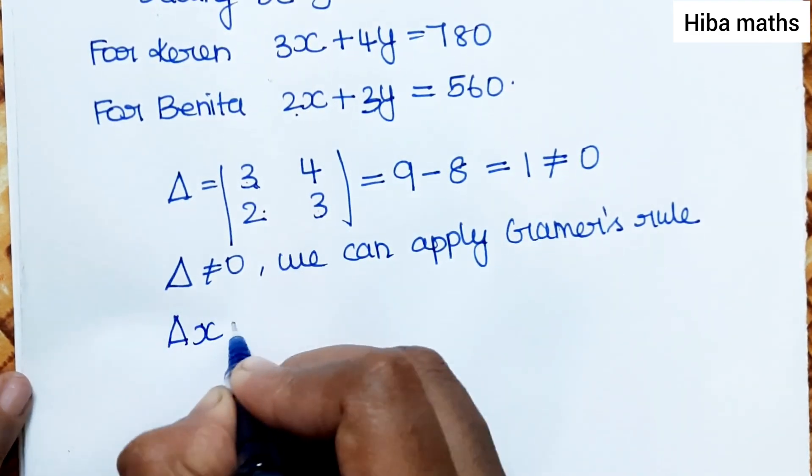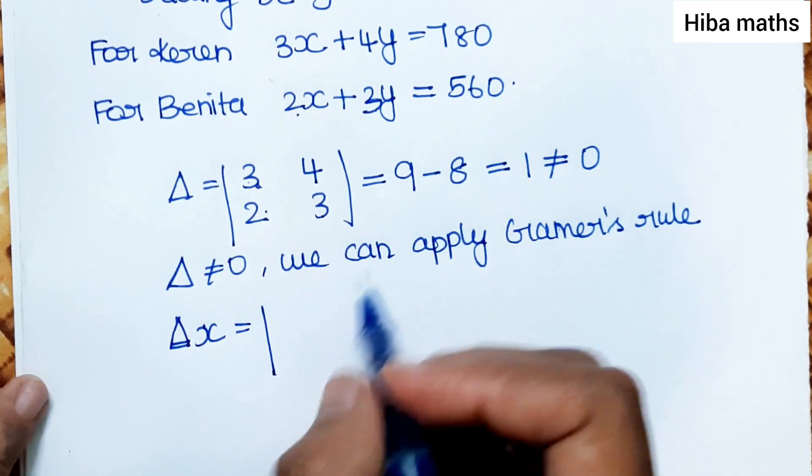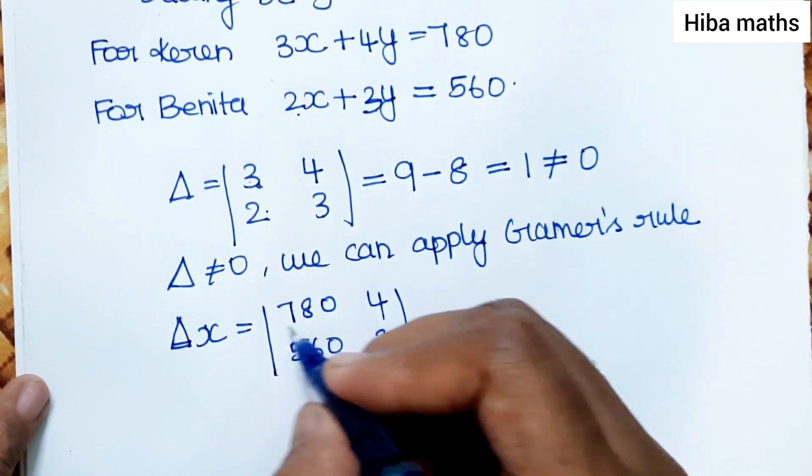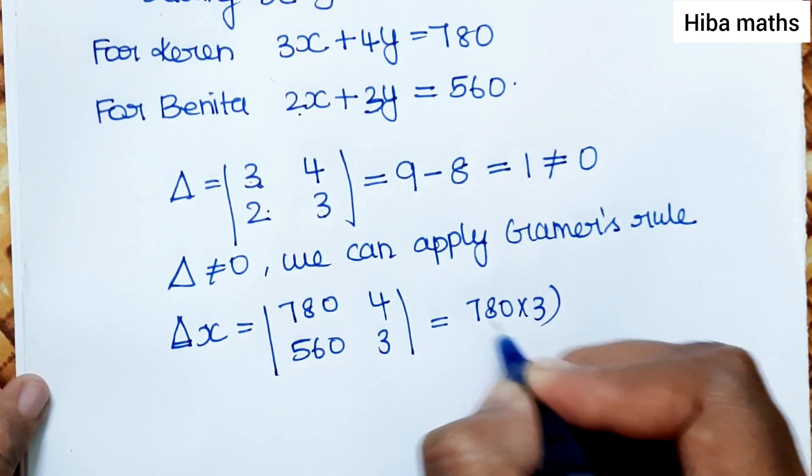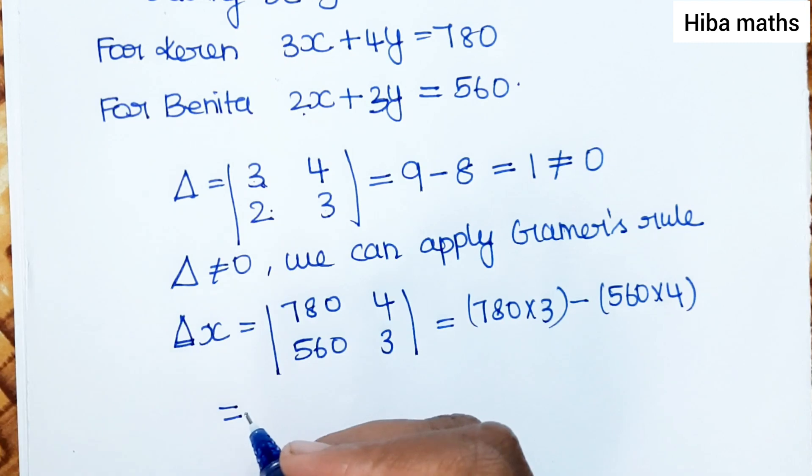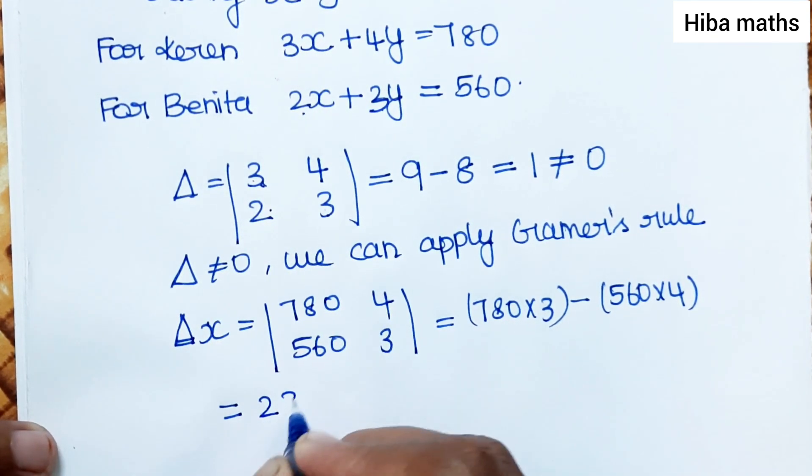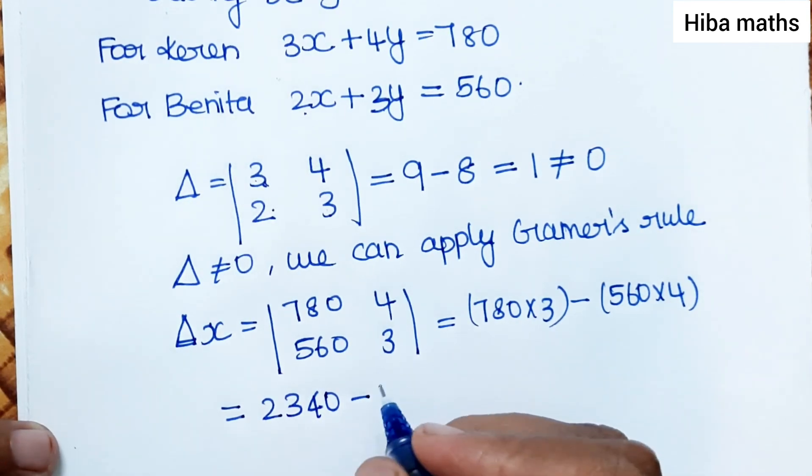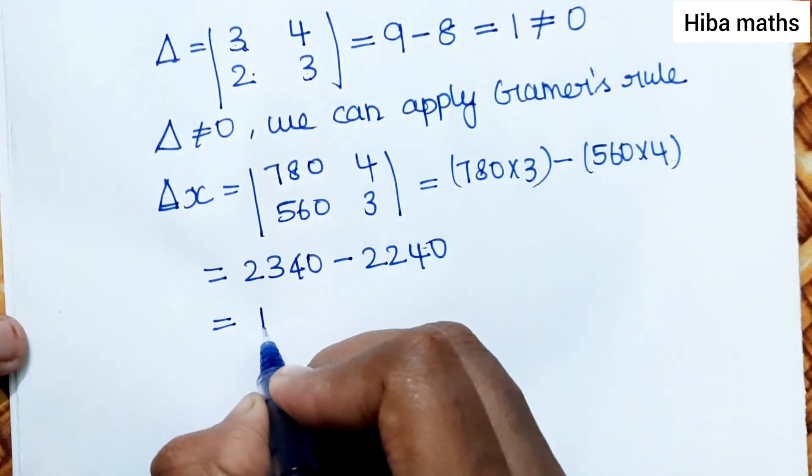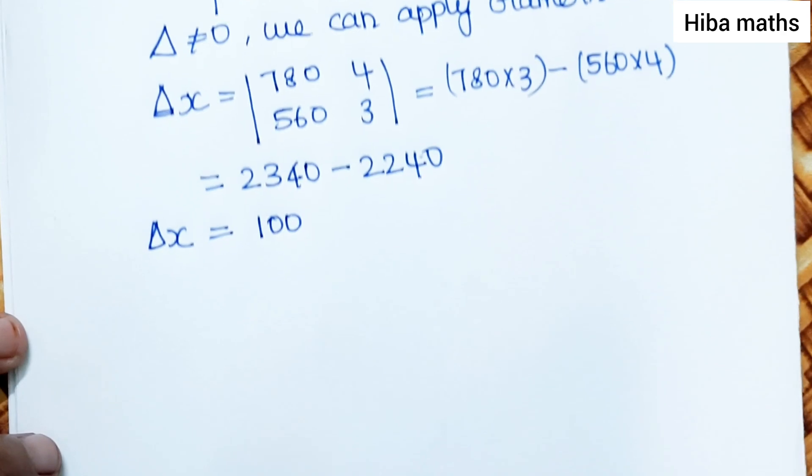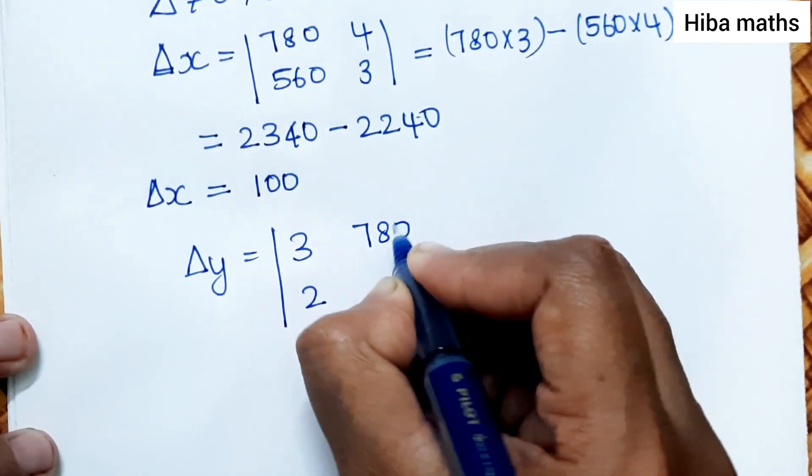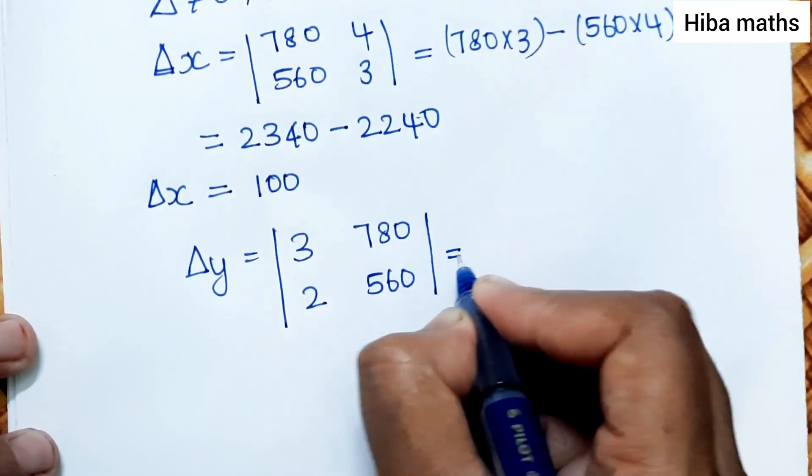Del x equals the determinant with first column replaced: [780, 4; 560, 3]. This equals 780 times 3 minus 560 times 4, which is 2340 minus 2240, equals 100.